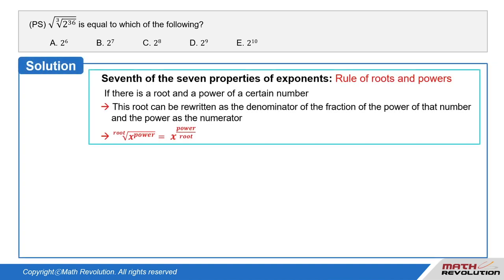Solution. Seventh of the seven properties of exponents, also called the rule of roots and powers: if there is a root and a power of a certain number, this root can be rewritten as the denominator of the fraction of the power of that number and the power as the numerator.